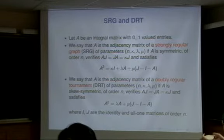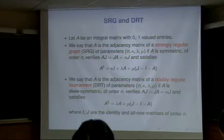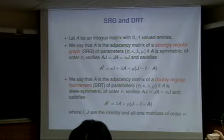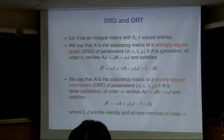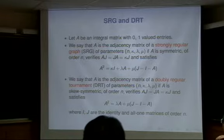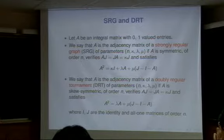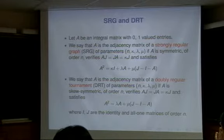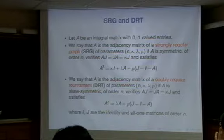We can also get CIS codes by looking at well-known graphs from algebraic combinatorics. Let A be the 0-1 adjacency matrix of a strongly regular graph with parameters (n, κ, λ, μ). This means A is symmetric and satisfies A^2 = κI + λA + μ(J - I - A). The counterpart is called a doubly regular tournament — in this case it's skew-symmetric and A^2 satisfies a different condition. There is a fancy name to include both: two-class association schemes.